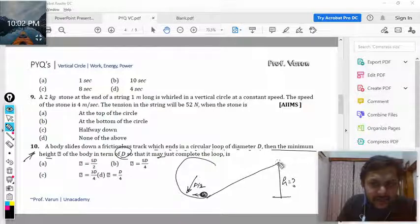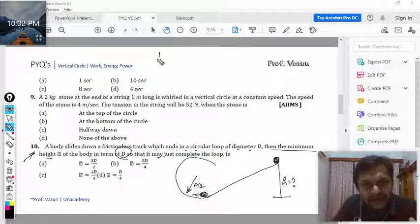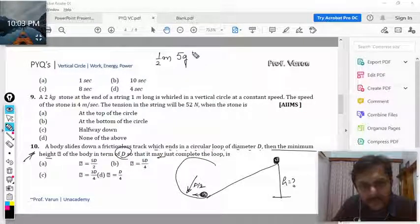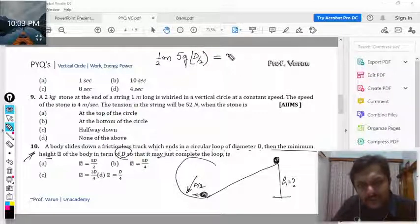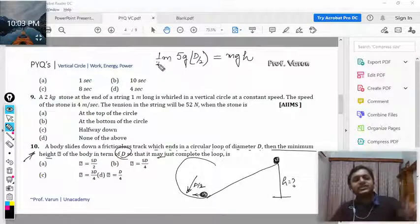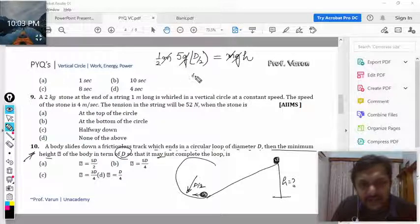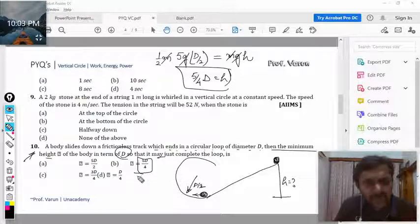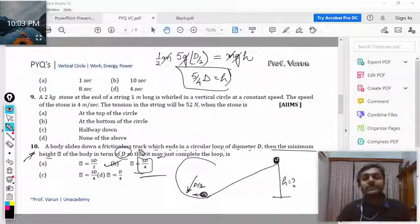The kinetic energy there will be half m v squared. This should equal mg into h. We need to find h and from this equation we will find it. That is coming out to be 5 by 4 d. Well the answer is 5 by 4 d, my dear students, so the answer will be B.